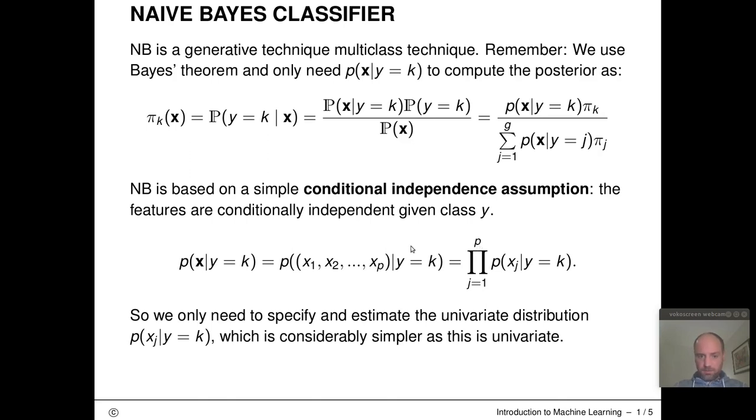This means if we have to estimate this, we don't have to estimate a multivariate density completely in one go, which is pretty difficult in high dimensional spaces. We only have to estimate these p simple univariate densities, and we know perfectly well how we can do this.